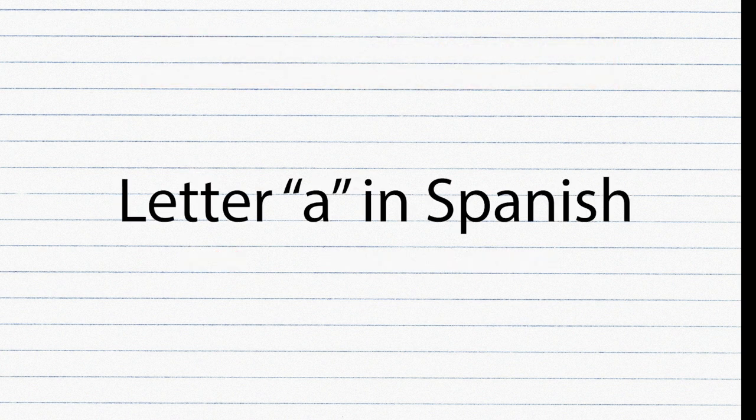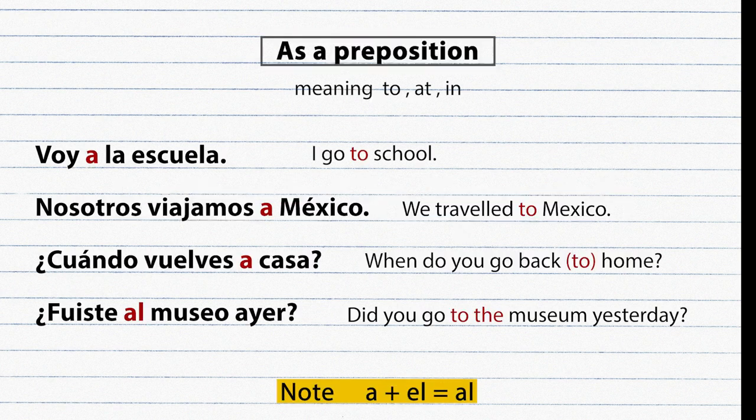The letter A in Spanish has many functions. As a preposition, it means to, at, or in. Examples: Voy a la escuela. Nosotros viajamos a México. ¿Cuándo vuelves a casa? ¿Fuiste al museo ayer?